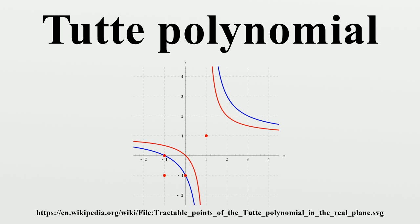The question of which points admit a good approximation algorithm has been very well studied. Apart from the points that can be computed exactly in polynomial time, the only approximation algorithm known for T_G(x,y) is Jerrum and Sinclair's FPRAS, which works for points on the Ising hyperbola for y greater than 0. If the input graphs are restricted to dense instances with bounded degree, there is an FPRAS if x≥1, y≥1. Even though the situation is not as well understood as for exact computation, large areas of the plane are known to be hard to approximate.